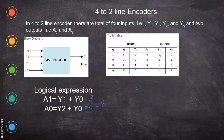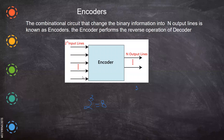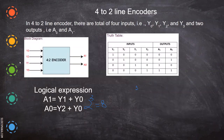We will see with an example: a 4-to-2 line encoder. Here, 4 inputs are there and you will have 2 outputs. That is, 2-power-n means 2-power-2, which is 4 inputs, and we have 2 output lines.